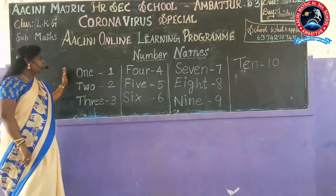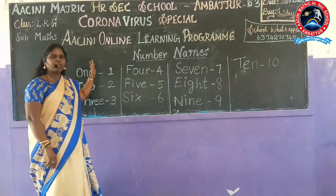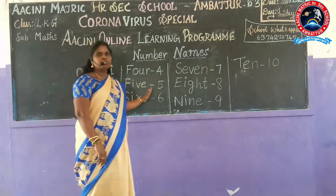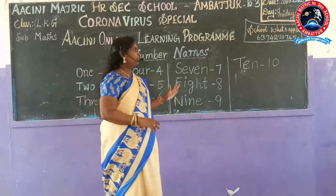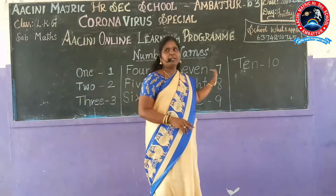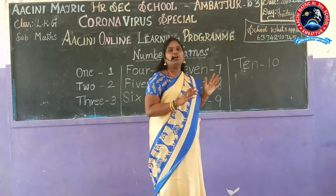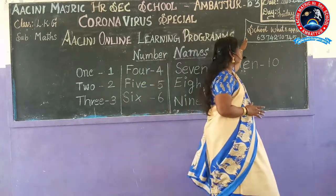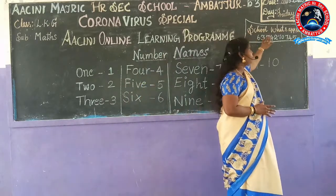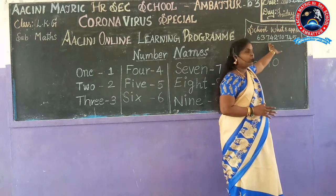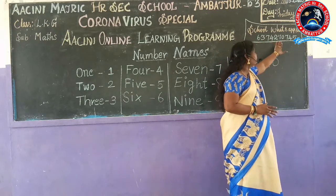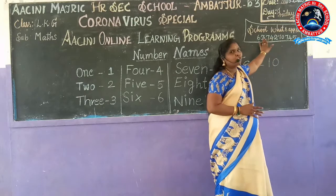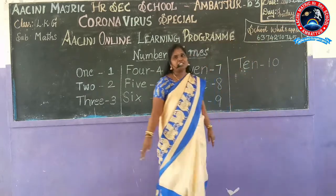Now you have learned the number names from 1 to 10. What you are going to do for homework is write the number names 1 to 10 in your homework log and send it to the school WhatsApp number 637-427-0745. Thank you, children!